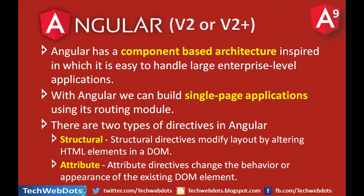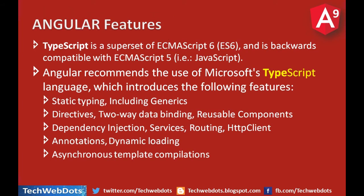There are two types of directives in Angular. One is structural and the second is attribute type. Structural directives modify the layout by altering HTML elements in the DOM, while attribute directives change the behavior or appearance of existing DOM elements, like look and feel.